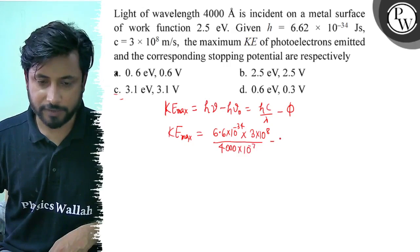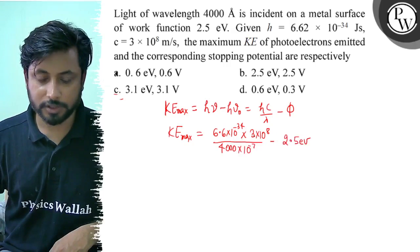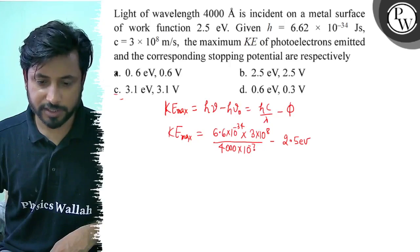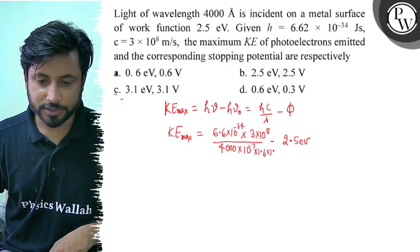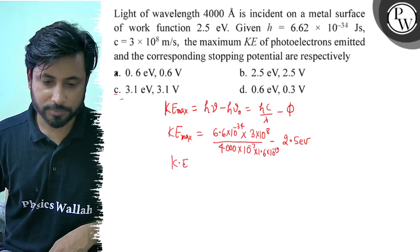Minus phi, phi is 2.5 electron volts. Now this value is in joules, so we convert to electron volts by dividing by 1.6 into 10 to the power minus 19. Now we can solve for maximum kinetic energy.